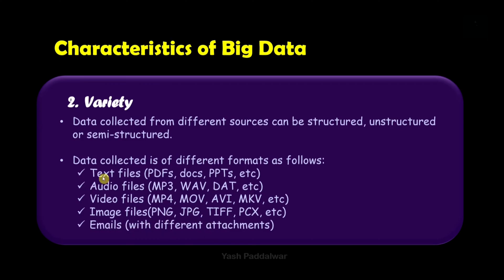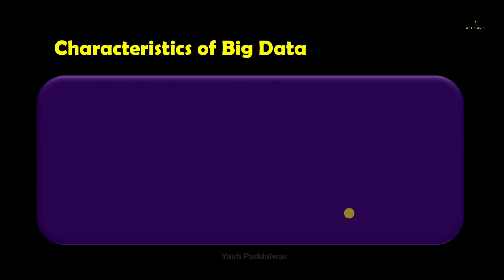Emails also contribute to variety, as they contain textual data and can also contain different attachments. These attachments can be text files, audio files, video files, or image formats — basically a combination of all the different types mentioned. This covers the Variety characteristic of big data.